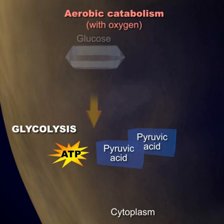However, as the breakdown of glucose continues to the next step, the citric acid cycle, oxygen will be required, making it an aerobic process.